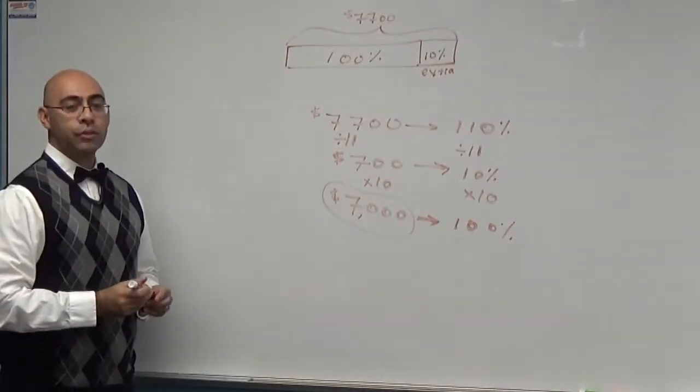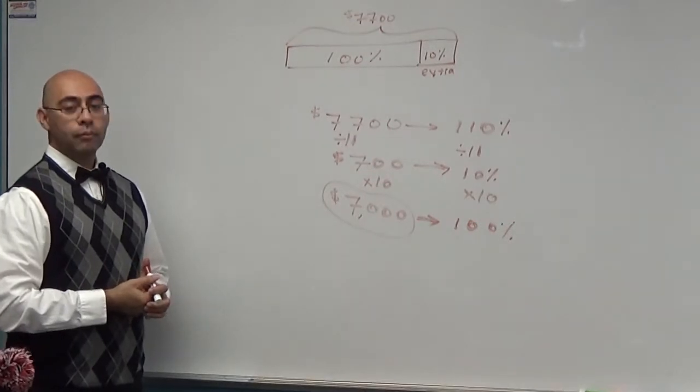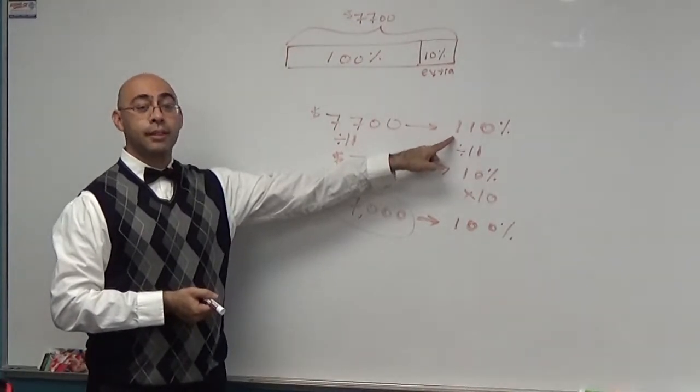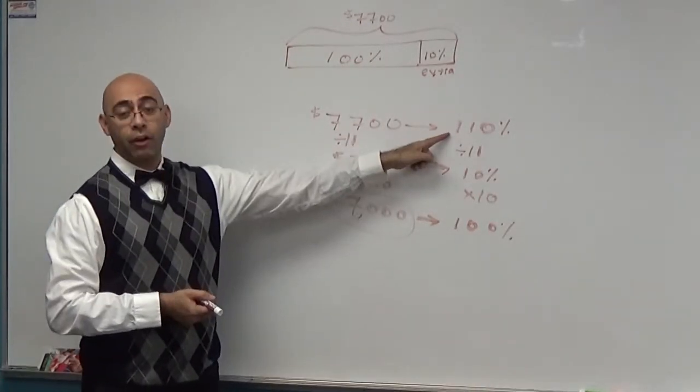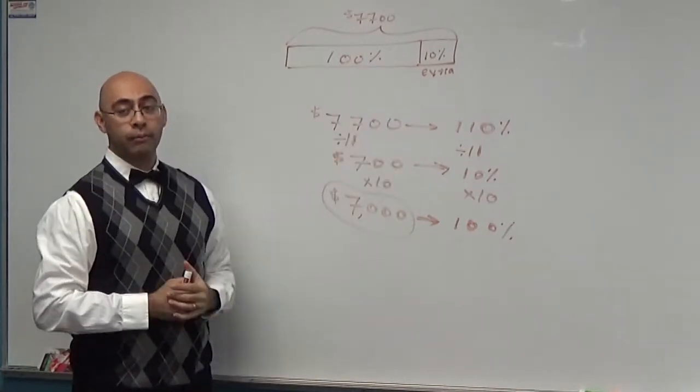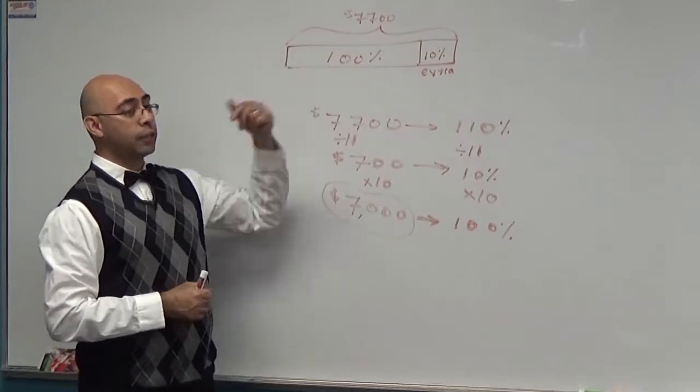So Daryl had $7,000 in his account. This is what you're learning today. How to figure that out. Best way to do it, draw a picture for it.